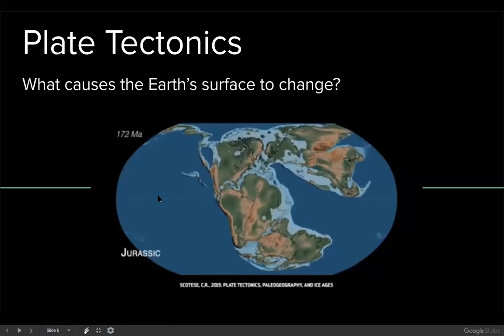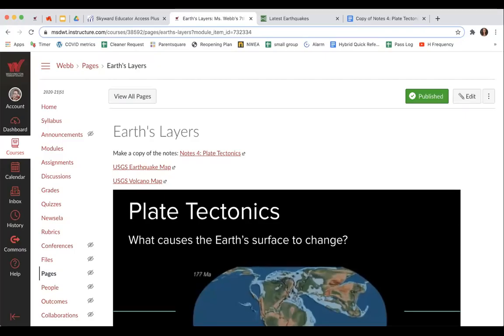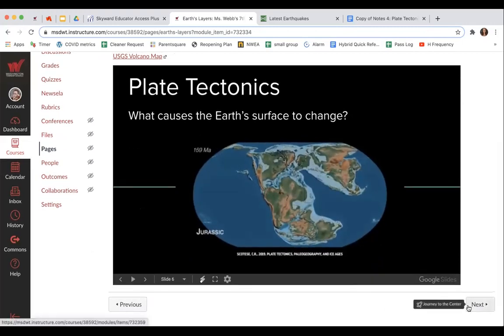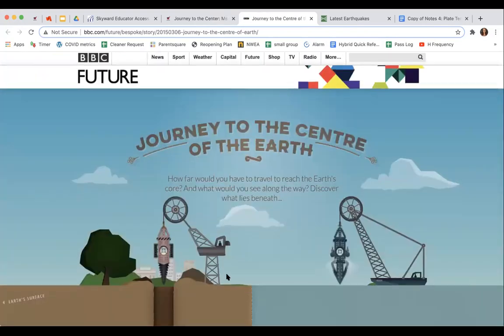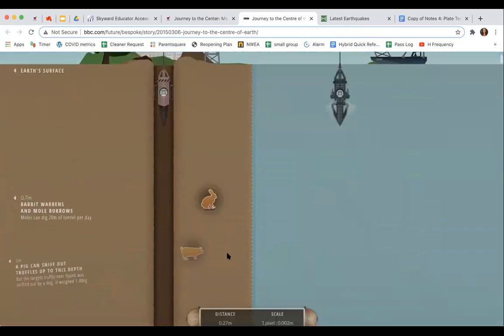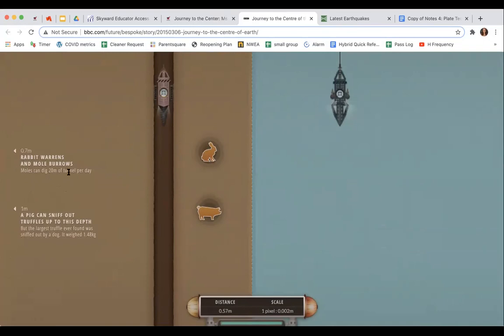We're going to save plate tectonics for next class, so don't skip ahead and do it, you'll get too far ahead. At this point click next and you're going to do an activity called journey to the center. You're going to click on this link and this is a virtual journey if we drill a hole to the center of the earth. This side shows through solid rock, this side shows diving through the ocean, and we pass different markers that show us where things might be as we go down to the center.